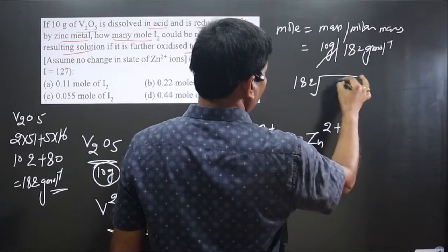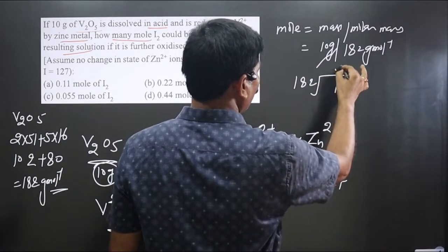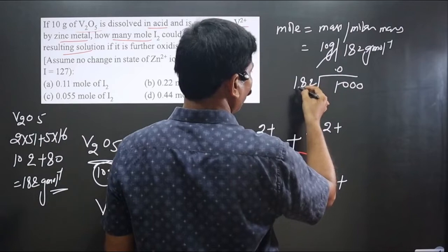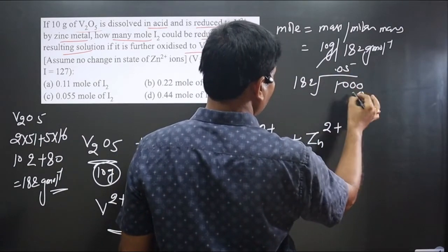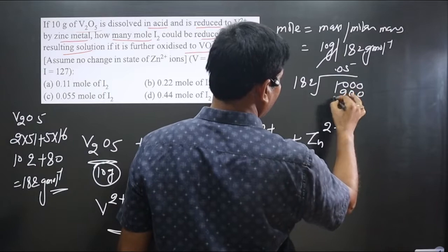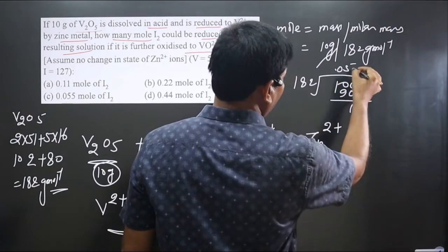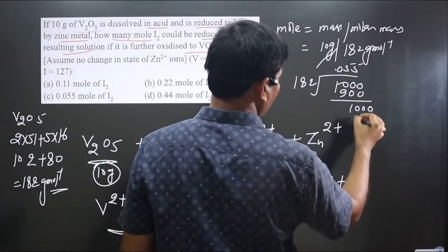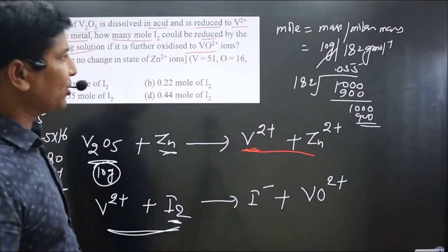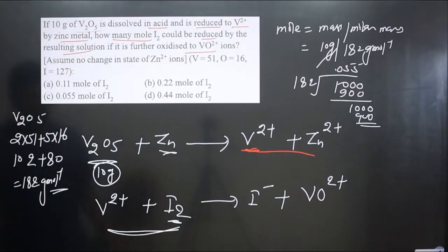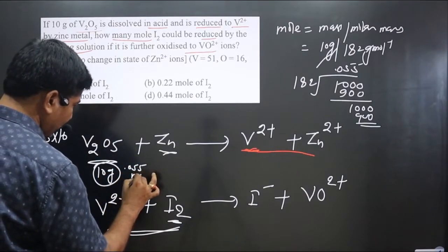Dividing 10 by 182, we get approximately 0.055 moles of V2O5.